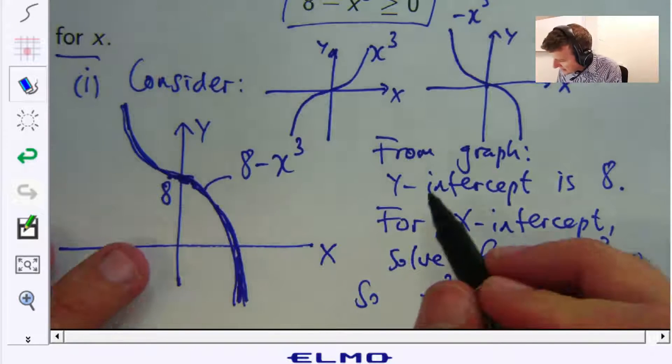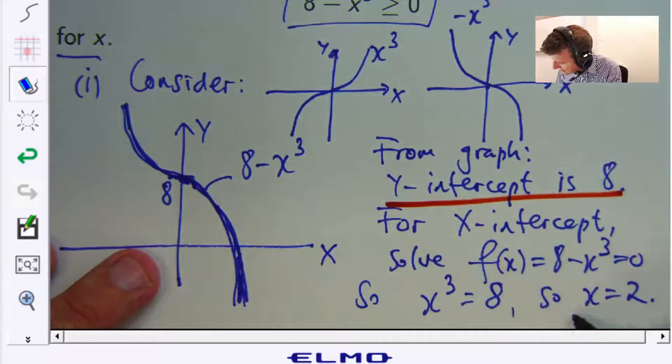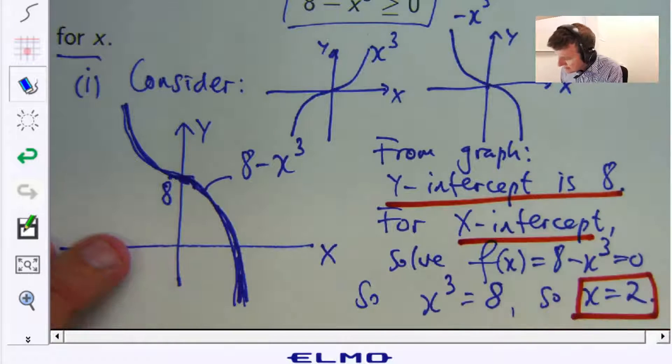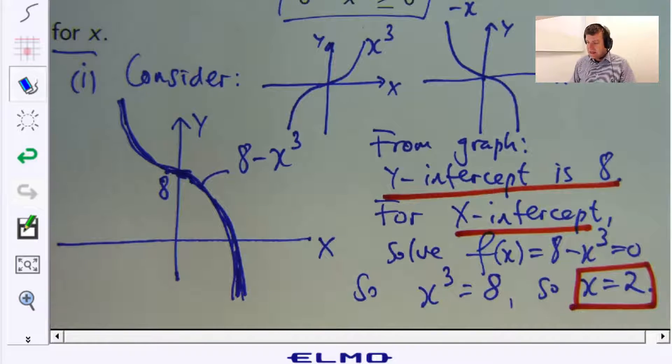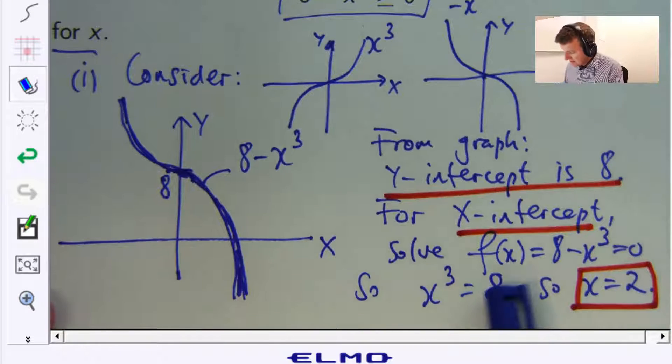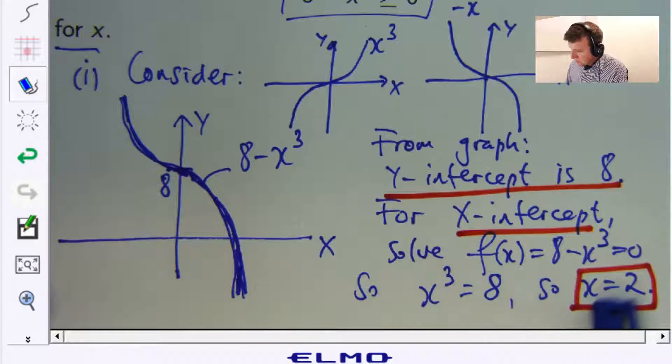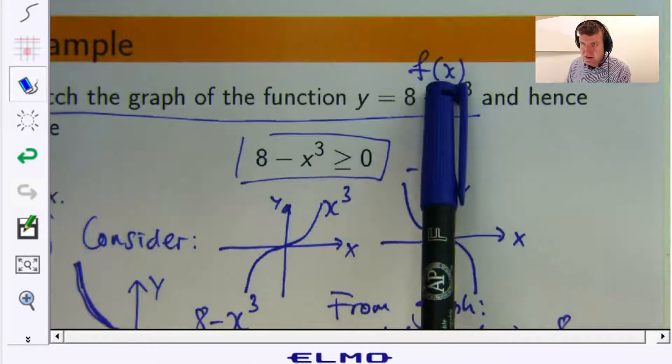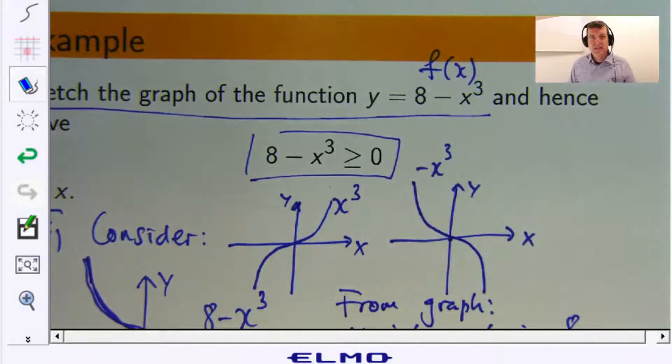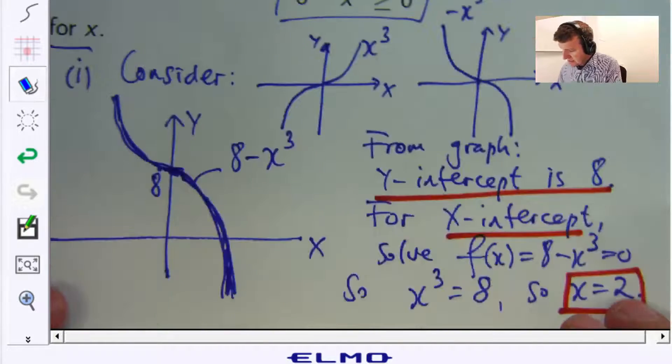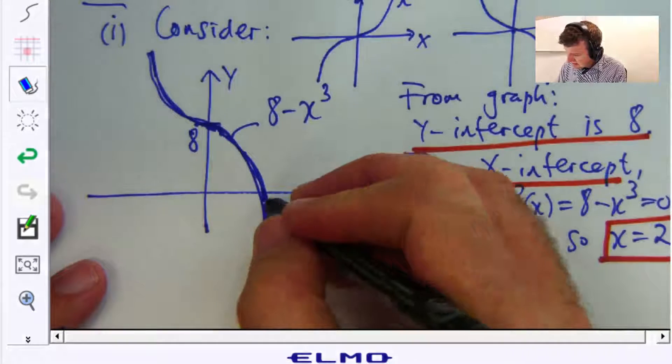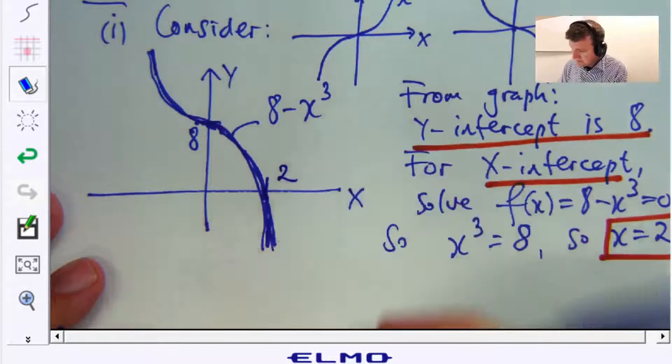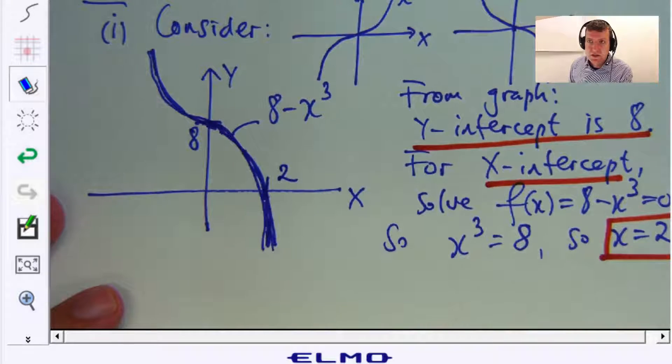So the y-intercept is 8. The x-intercept is 2. Now if you didn't like that particular way I've done it there, you can factor this by using the difference of 2 cubes, but it's a little bit more drawn out. But if you want to do that, you can. So this point here will be 2.